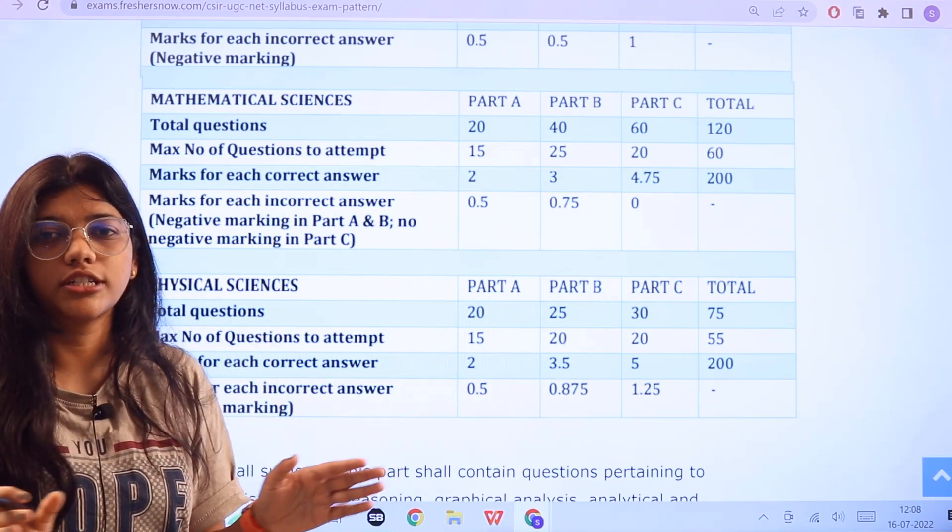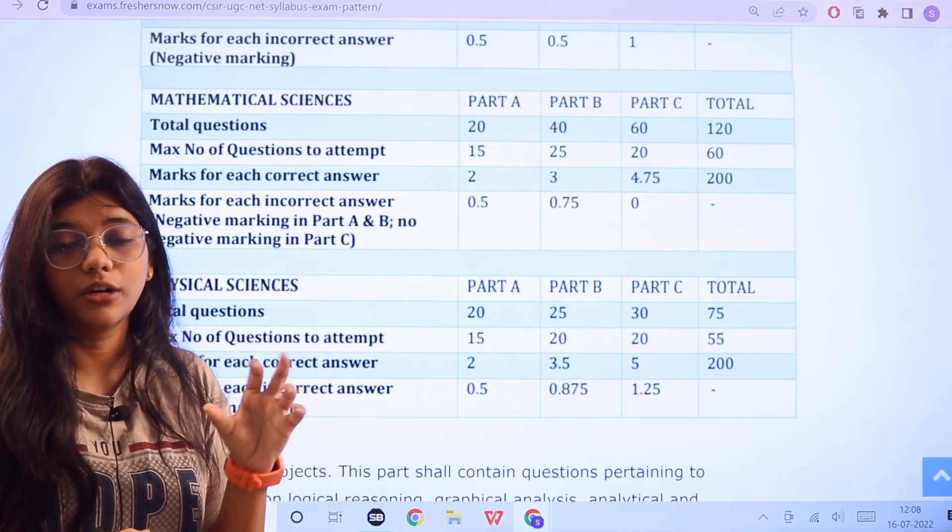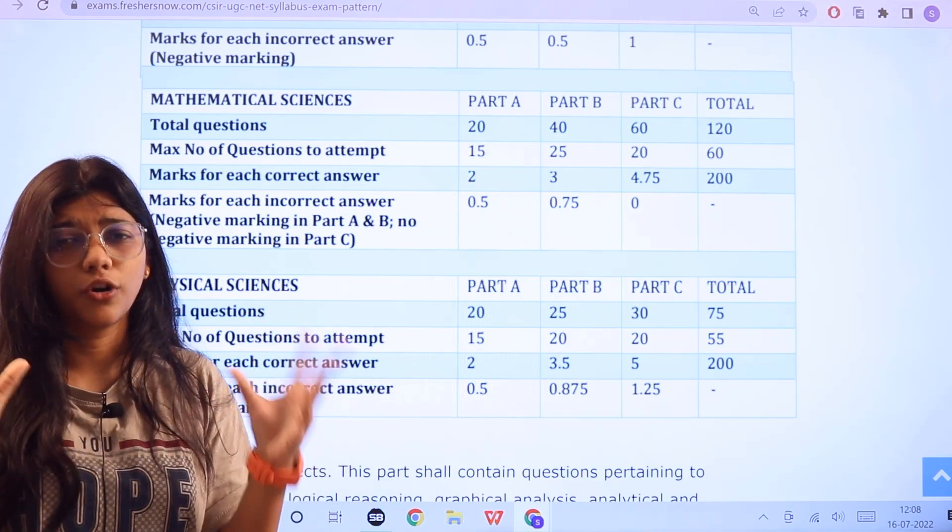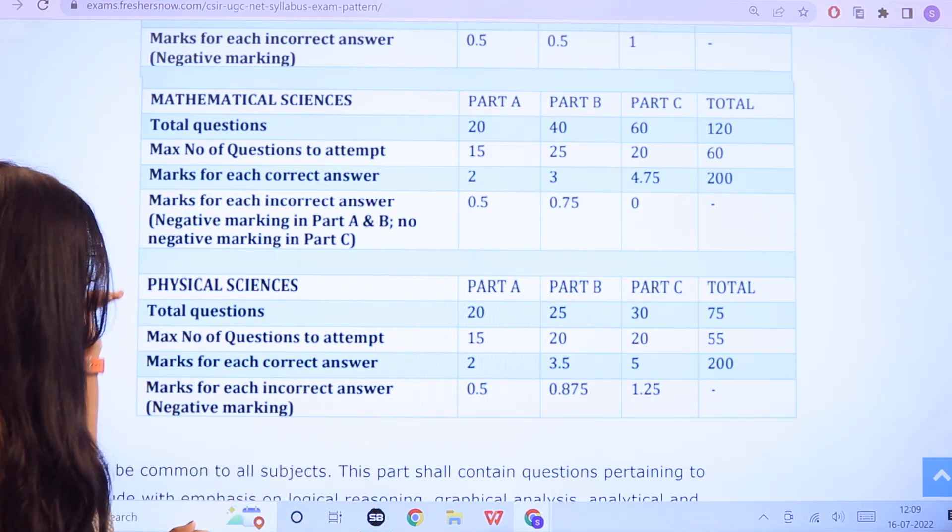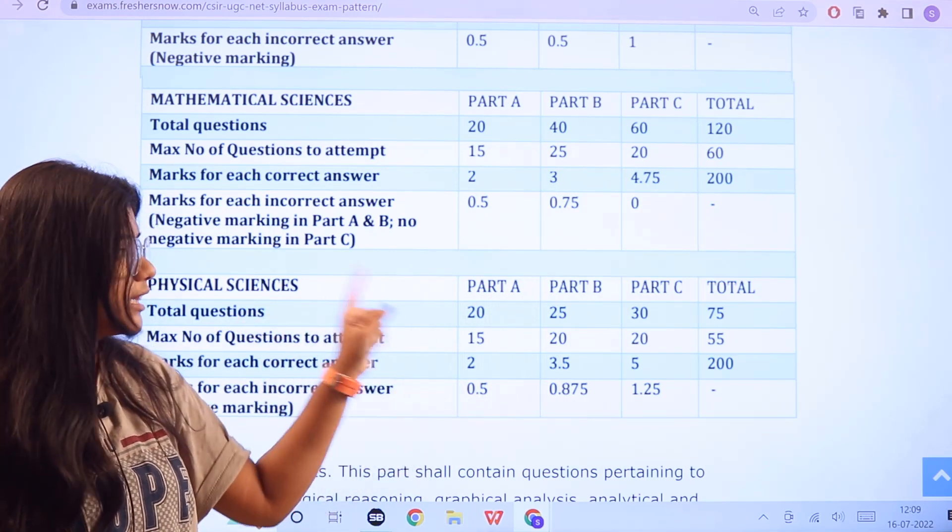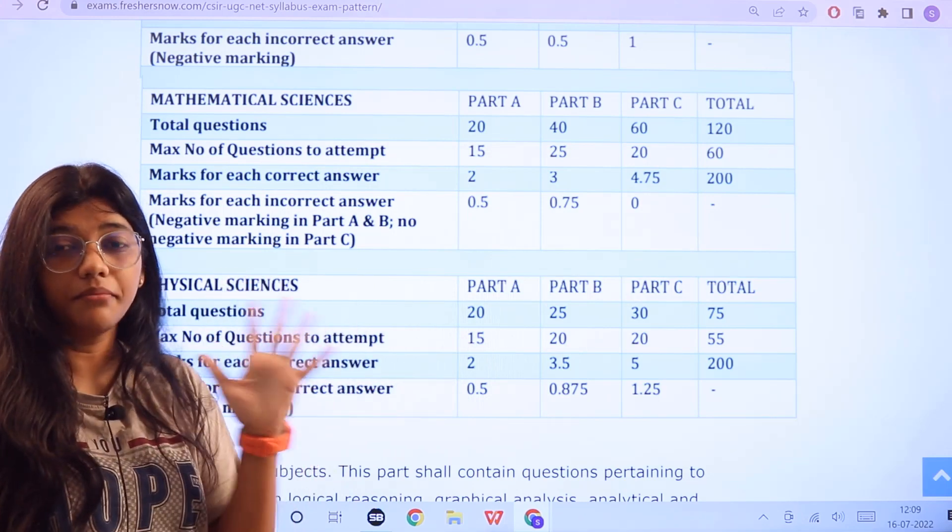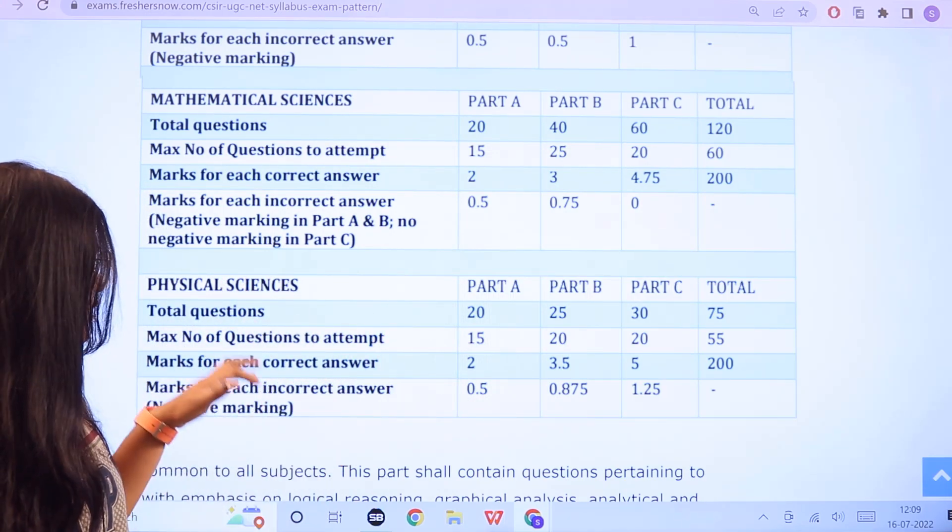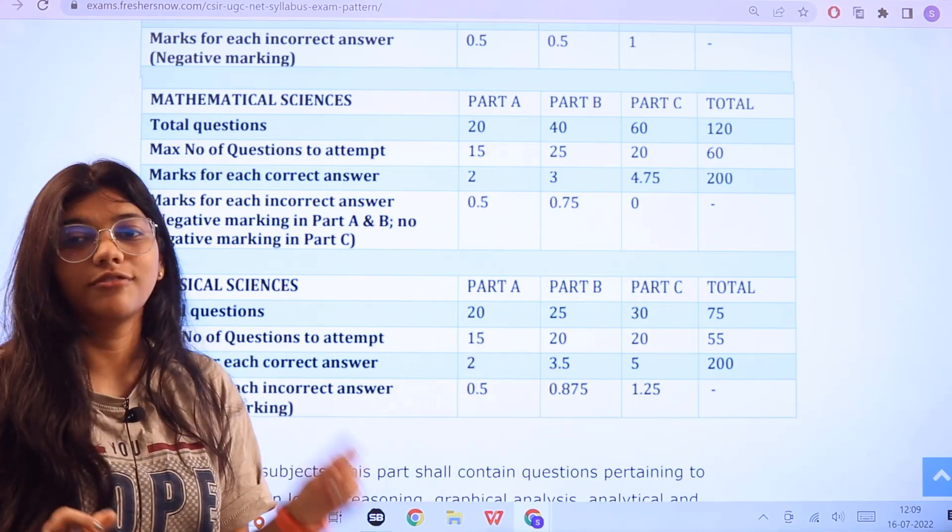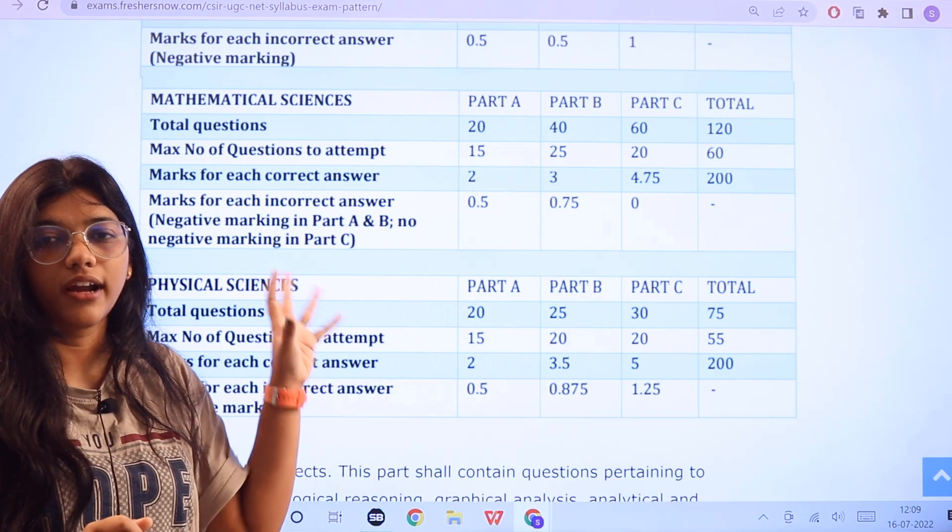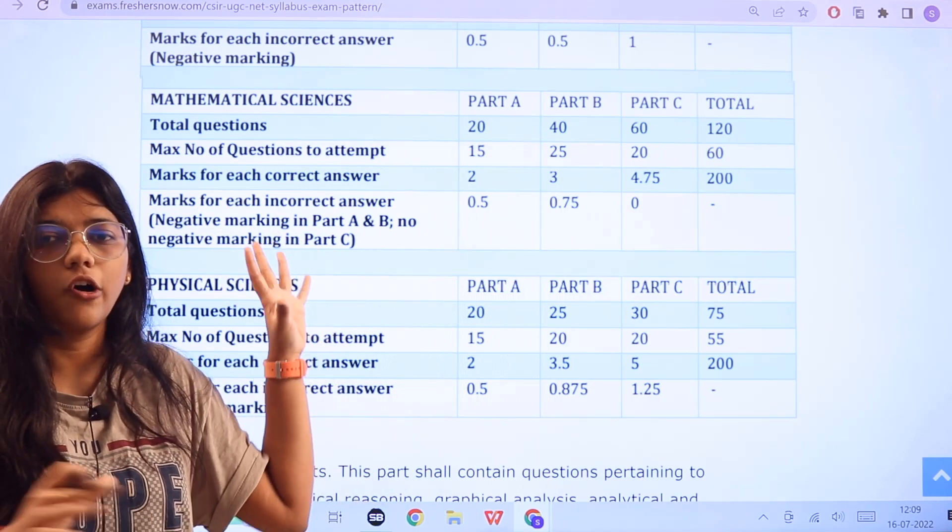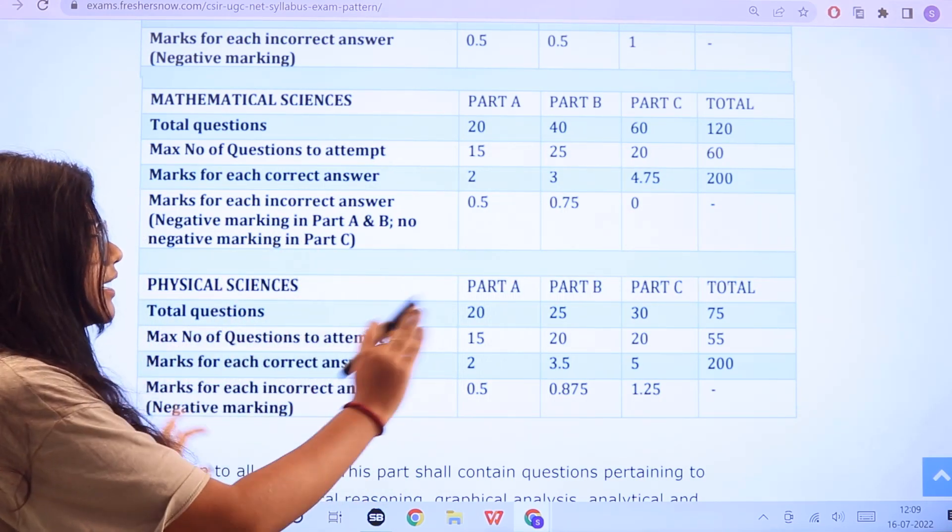Physical sciences: the total questions are 75 and you have to answer maximum 55 questions and the marking criteria is for 200. Here you have a good sum of negative marking as well. The total questions in part A are 20, part B are 25, part C is 30. For every correct answer you would be given 2 marks for part A, 3.5 marks for part B, and 5 marks for every correct answer in part C. And here the negative marking is: part A is 0.5, part B 0.875, part C you have 1.25. This is the total for all of the subjects. So we have covered all of the different sectional papers with different parameters of marking.